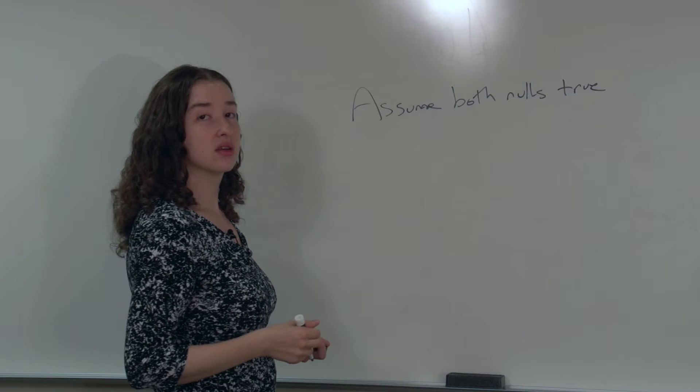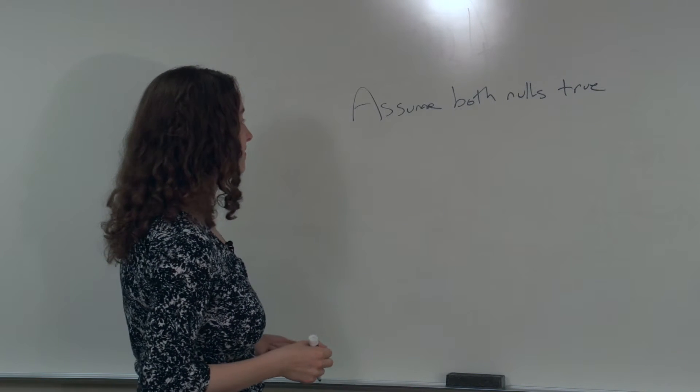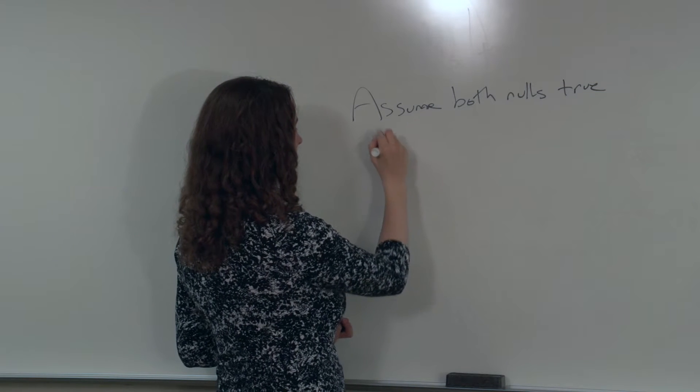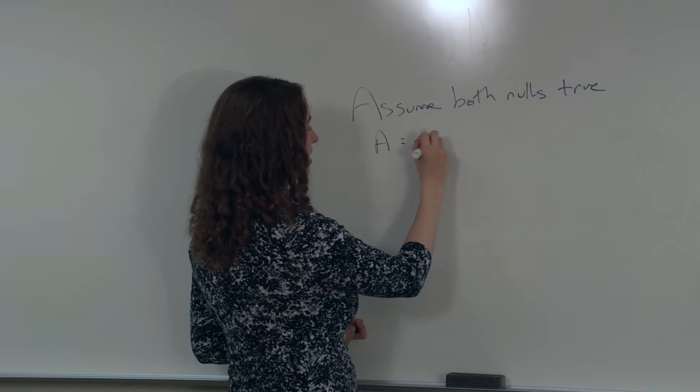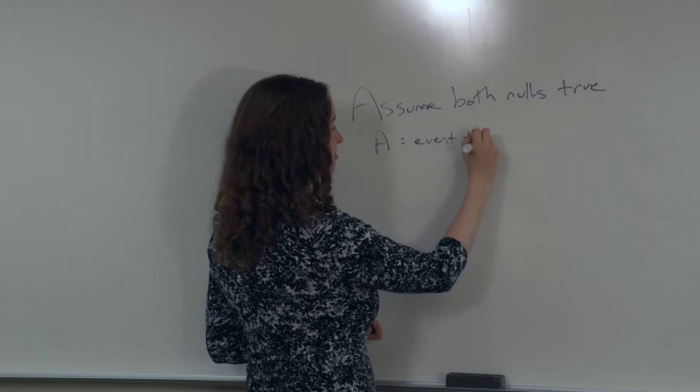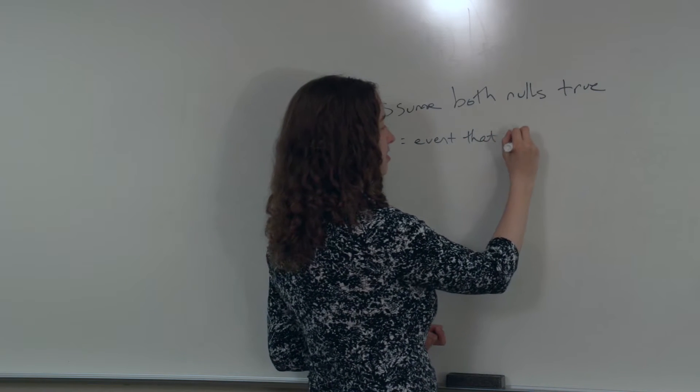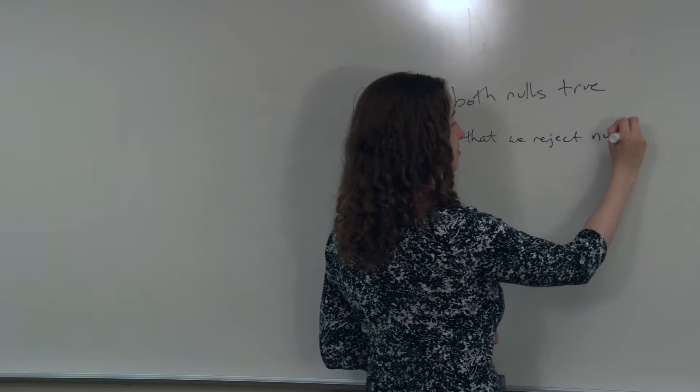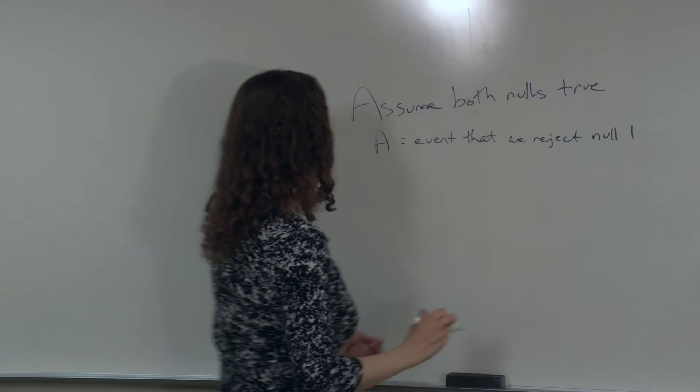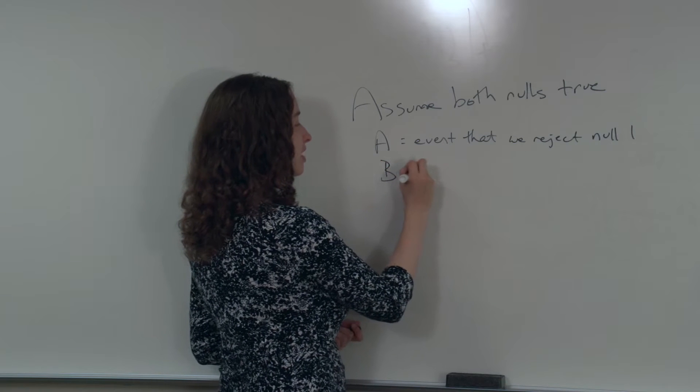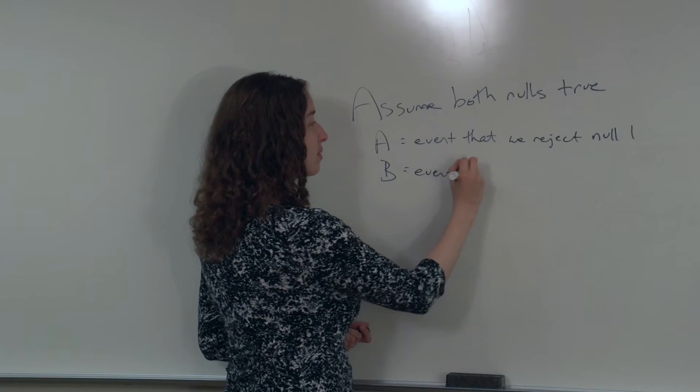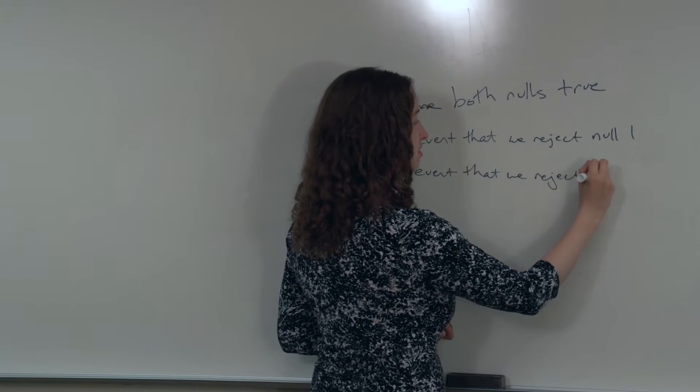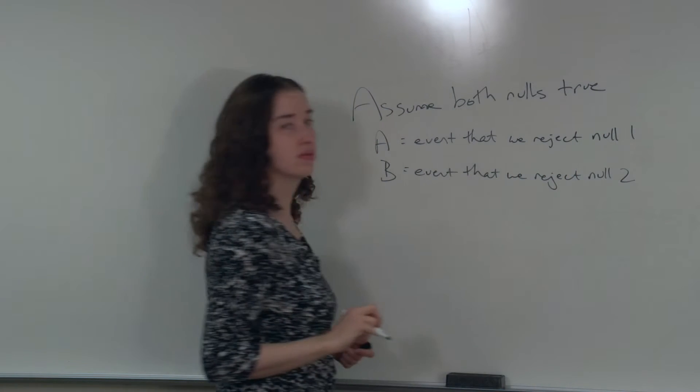And we're going to talk about two different possible events. Let's say that A is the event that we reject the null for the first test. And let's say that B is the event that we reject the null for the second test.